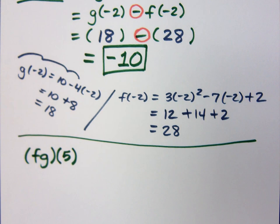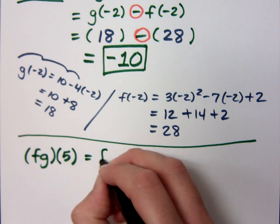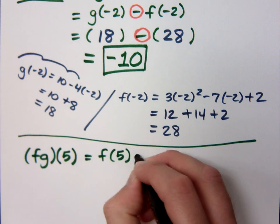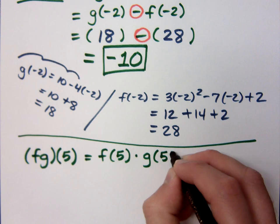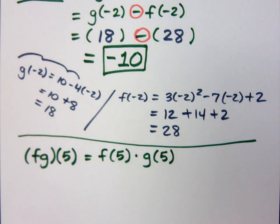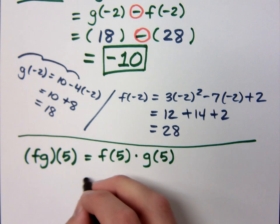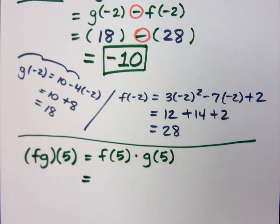If I write this, fg of 5, what does that mean? That means I need to figure out f of 5 multiplied times g of 5. f of 5 multiplied times g of 5. Now, going back to how we have defined our functions, we should figure out what f of 5 is. So maybe here off on the side we figure that out.